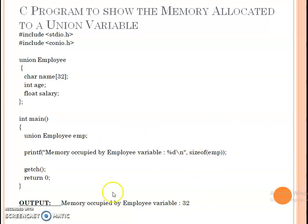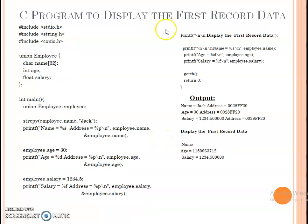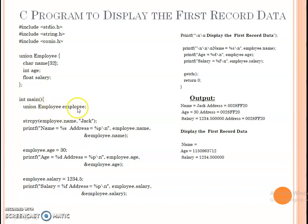This is the first program in union. Coming to the second program, here I have declared header files, then I declare union employee. I have declared three variables. Then in the main function, I declare a union employee reference variable. There are two different parts: the first is the union name definition, and the second is the reference variable for this union.